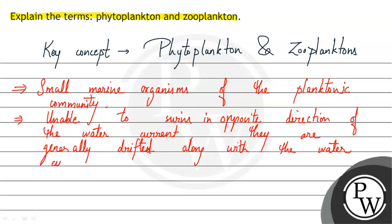Phytoplankton are so small that in the sea or water bodies, they can't swim against the water currents or water flow, because they are very small and do not have any suitable appendages to swim in the opposite direction. So they are drifted along with the water currents.